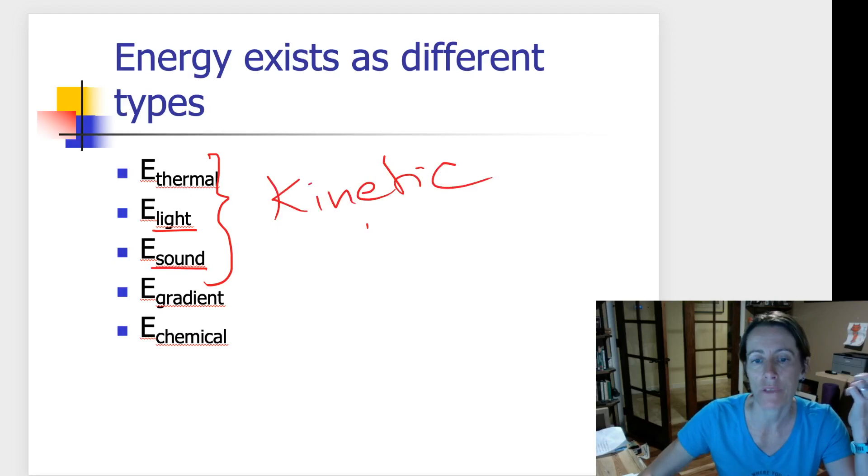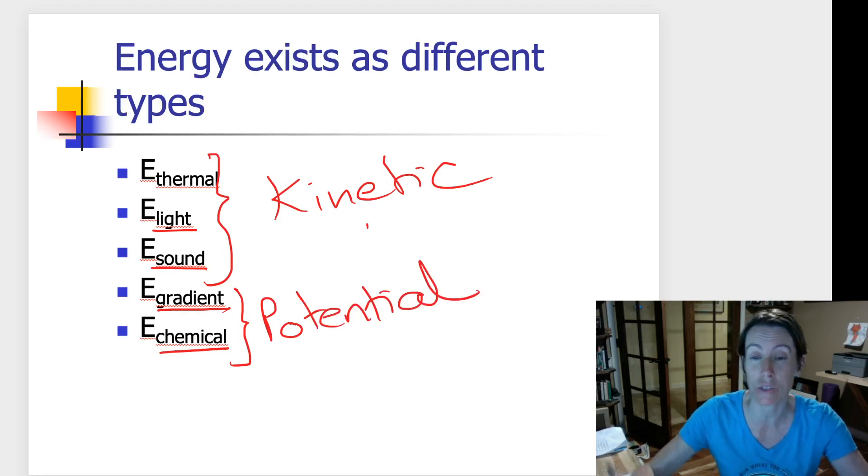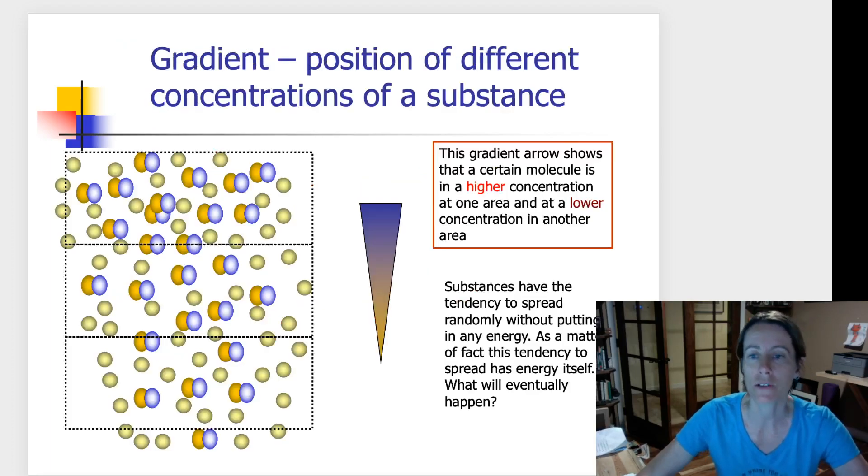We also have two other forms of energy written down here: the energy of a gradient and chemical energy. And these energies are not to do with movement. They're to do with energy that's stored away. It can be released at any point, but it's not necessarily something actually physically moving around. So we call these a form of potential energy, because it has the potential to do something, but it's not doing something right now. It's kind of stored in there. First of all, let's talk about gradient energy.